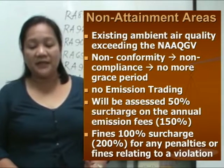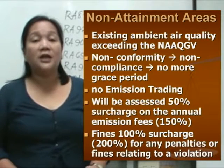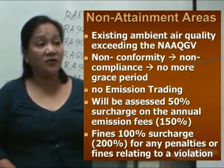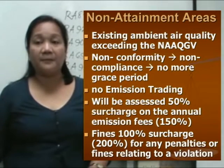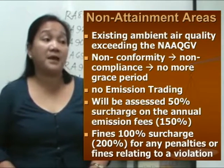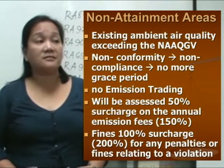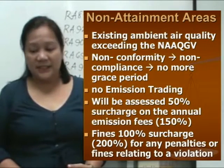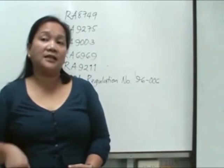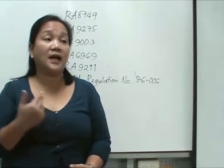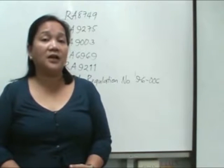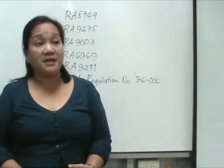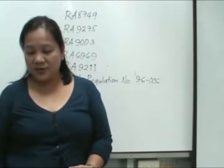Aside from that, if you are under a non-attainment area, you will be assessed a 50% surcharge on the annual emission fees. That means if company A in an attainment area pays 100 pesos, company B located in a non-attainment area should pay 150 pesos. And fines, just in case of non-compliance, will be given a 100% surcharge — meaning you have to pay 200% for any penalties or fines relating to a violation. So if you're in a non-attainment area and you're supposed to pay 500 pesos, you will be charged 1,000 pesos because of the 100% surcharge.